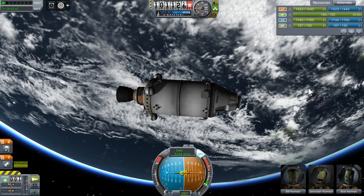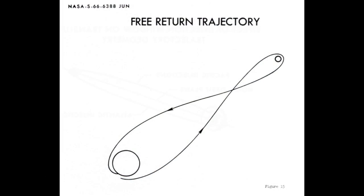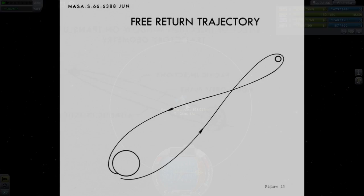What is a free return trajectory? Simply put, it is an orbit that makes a figure-eight pattern looping tightly around the moon in a clockwise or retrograde direction, which will bring you back home without any additional burns or maneuvers.